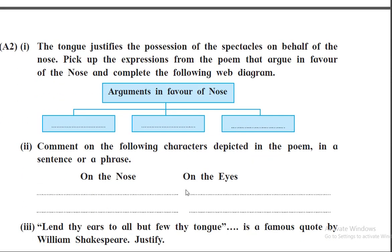The tongue justifies the position of the spectacles on behalf of the nose. Pick up the expressions from the poem that argue in favor of the nose and complete the web diagram. Arguments in favor of the nose: the nose had been wearing spectacles from time immemorial; the spectacles are designed to fit perfectly on the ridge of the nose; and it is impossible for a face without a nose to wear spectacles.